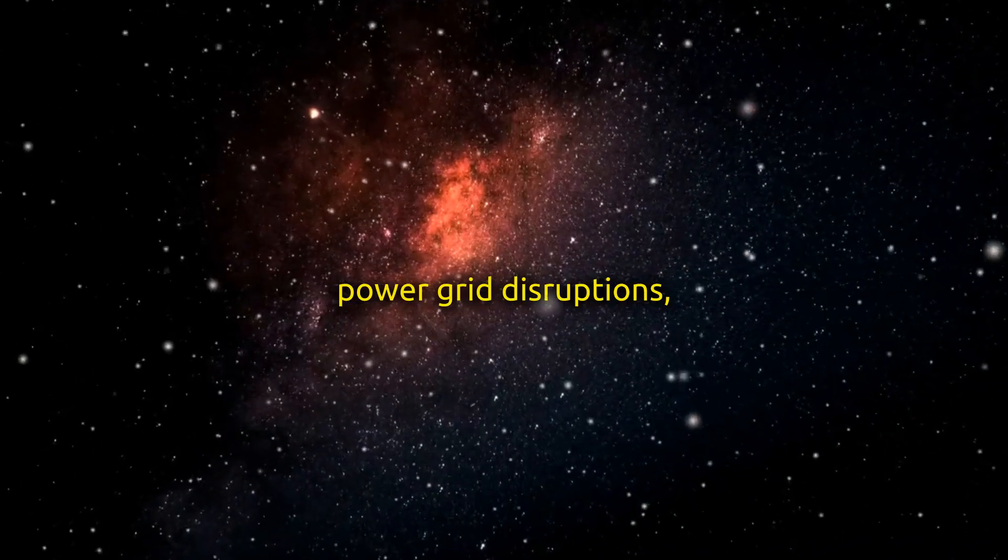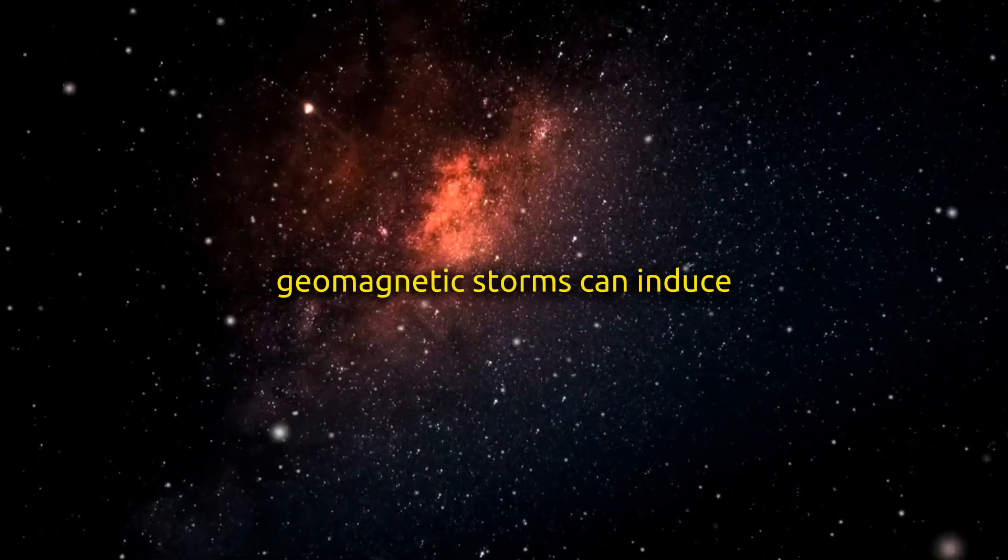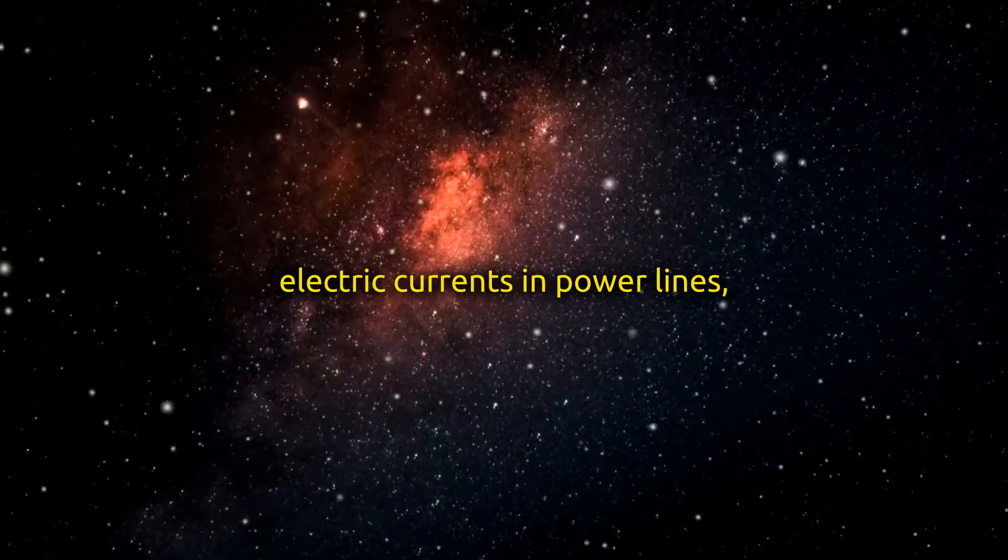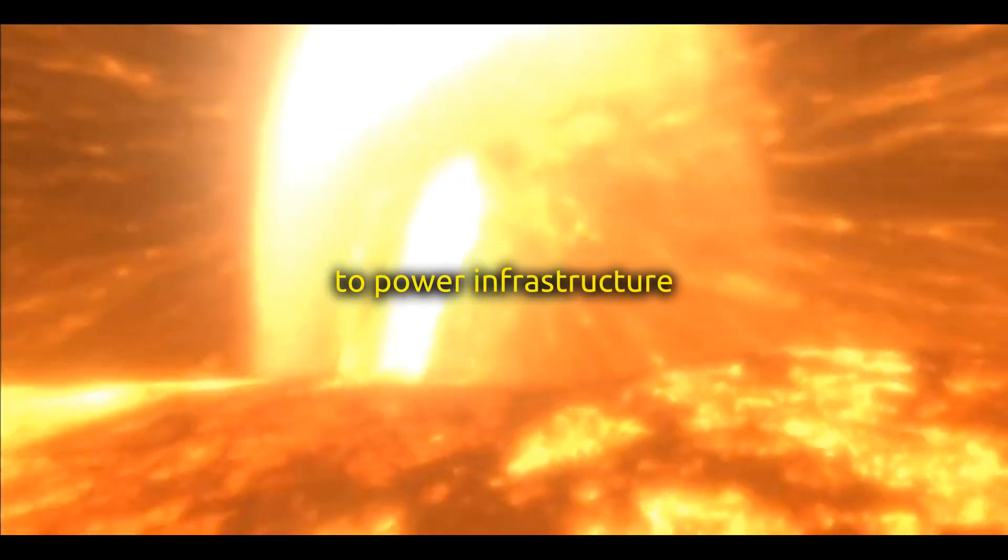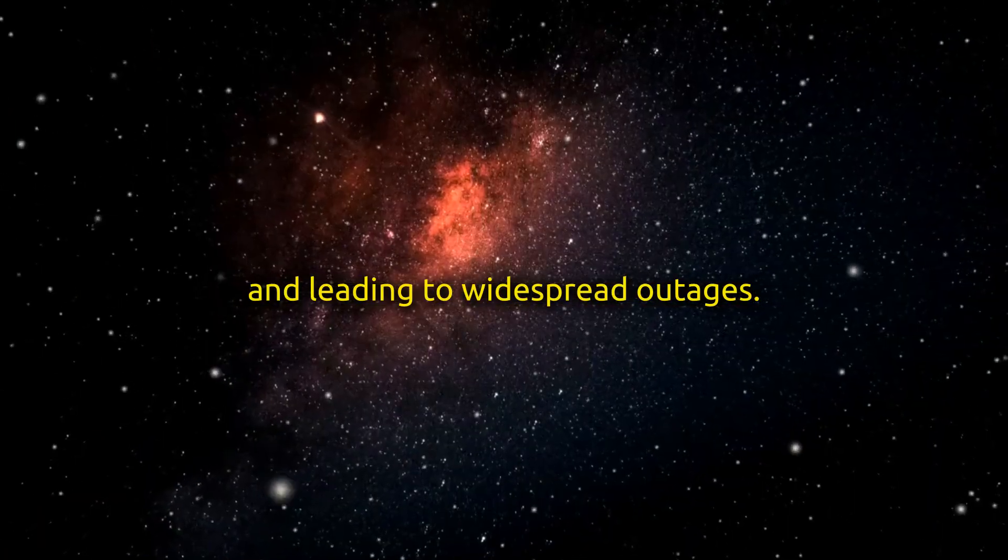Power grid disruptions: geomagnetic storms can induce electric currents in power lines, transformers, and other electrical systems, potentially causing damage to power infrastructure and leading to widespread outages.